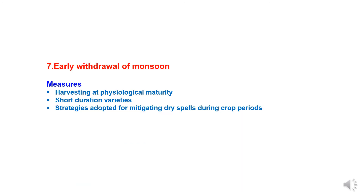The seventh parameter for contingent crop planning is early withdrawal of monsoon. In such cases, we have to go for harvesting at physiological maturity, as physiological maturity is the indicator of crop readiness. We should use short duration varieties and strategies adapted for mitigating dry spells during the crop period.